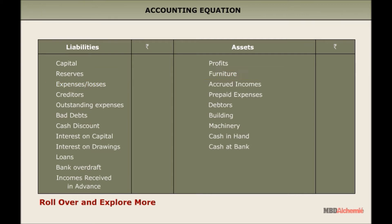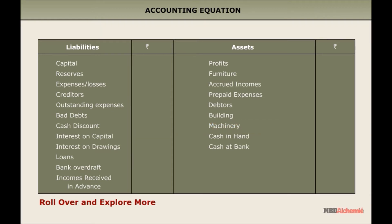Furniture is a fixed asset and is shown on the asset side of the balance sheet. Building is a fixed asset and is shown on the asset side of the balance sheet. Machinery is a fixed asset shown on the asset side. Cash in hand and cash at bank are also shown on the asset side of the balance sheet.